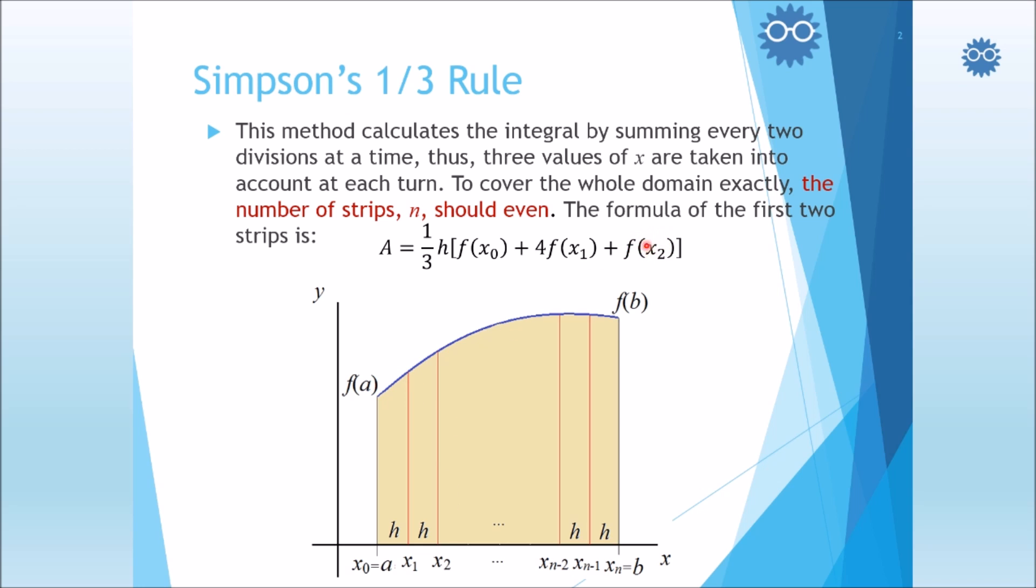And finally, we add the f(x sub 2), or the value of function at the final, or the third integration point of these two adjacent areas. And so on. We take the areas two by two, until we get to the last pair of strips.